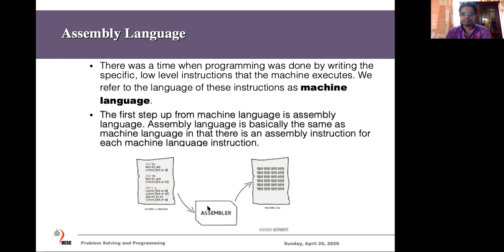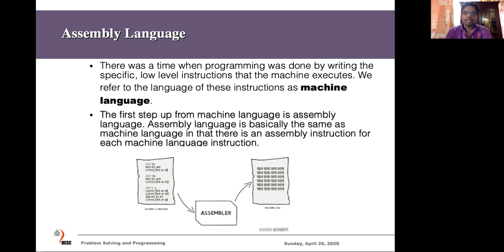There is a program written using machine instructions to convert assembly code to machine instructions. So instead of giving instructions to the computer using zeros and ones, we can give instructions using assembler — a slightly more meaningful three-letter code — instead of raw machine code. The code we write in assembler then needs to be converted to machine code, and then that machine code executes on the machine. That's how assembler code works.